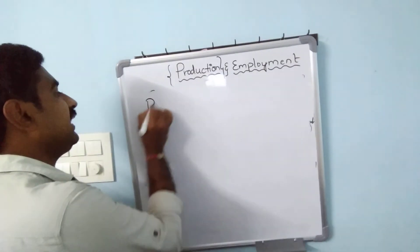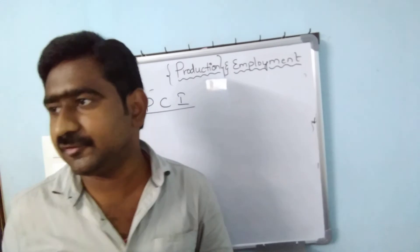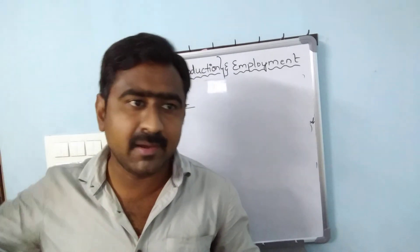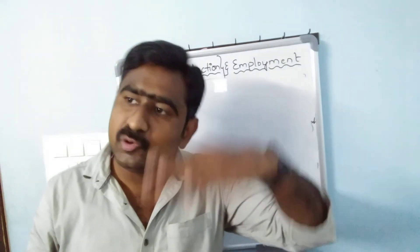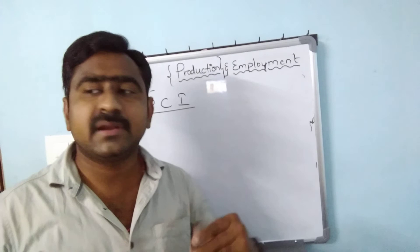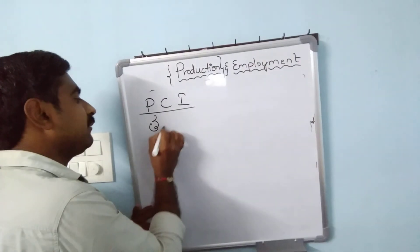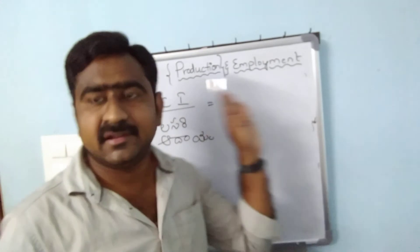The next concept is per capita income, abbreviated as PCI. Per capita income tells us how much income each person receives in a country. It is the ratio of total national income to total population. For example, if the total national income is divided by the total population, you get the per capita income — income per person.